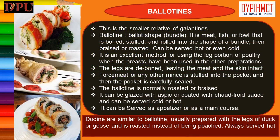Ballotines. This is the smaller relative of galantines. Ballotines are ballot-shaped bundles — a leg of poultry that is boned, stuffed, and rolled into the shape of a bundle, then braised or roasted. It can be served hot or cold and is an excellent method for using the leg portion of poultry when the breasts have been used in other preparations. The legs are deboned, leaving the meat and skin intact. Force meat or any other mince is stuffed into the pocket, which is then carefully sealed. The ballotine can be glazed with aspic or coated with chaud-froid sauce. Dindonneau — similar to ballotine — is usually prepared with the legs of duck or goose and is roasted instead of being poached, and is always served hot.